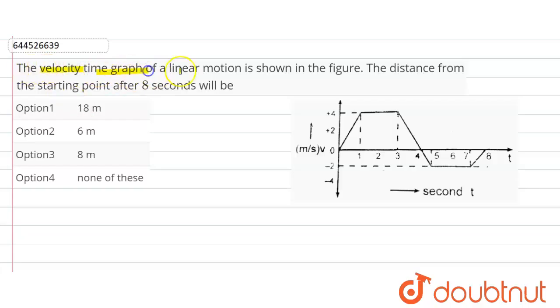The velocity-time graph of a linear motion is shown in the figure. The distance from the starting point after eight seconds will be... So we have to find the distance.